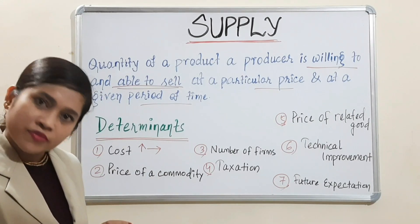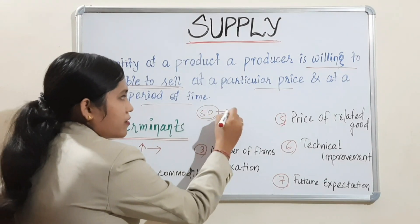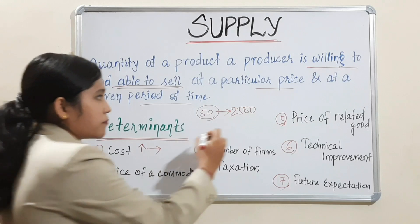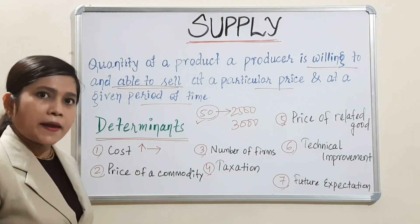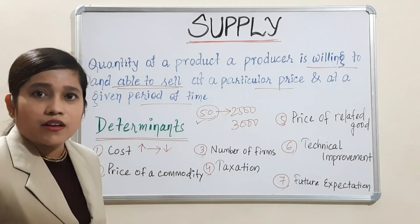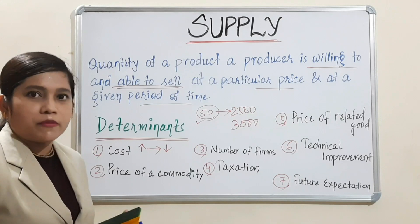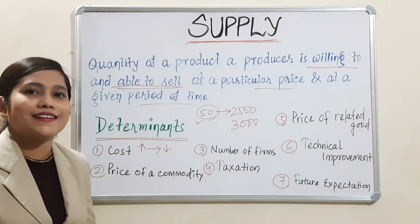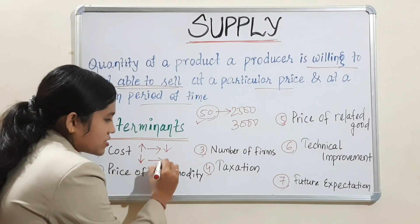When cost increases, we have to pay more for the same production, so profit will decrease. Initially I am producing 50 quintal rice and my cost of production is 2500. Now my cost has increased — I have to pay 3000 to produce 50 quintal of rice. Net profit will decrease because price is the same. So when cost will increase, our supply will decrease. Why? Because our profit has decreased — we will shift to some other crop. When cost will decrease, our supply will increase — inverse relation.